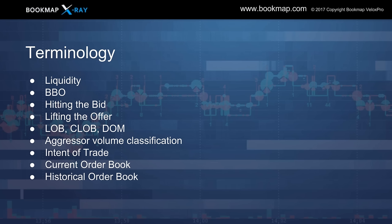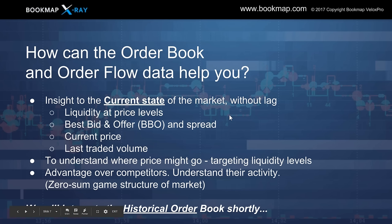We're going to talk about aggressor volume classification — those are market buys and market sells. The intent of trade refers to traders lined up on the bid or offer in the depth of market — the current state of that order book: depth on the offer, depth on the bid, best bid and offer, last traded volume, and the spread. Then we'll get into the historical limit order book and order flow, where we record all of this data and extrapolate it onto the historical chart.